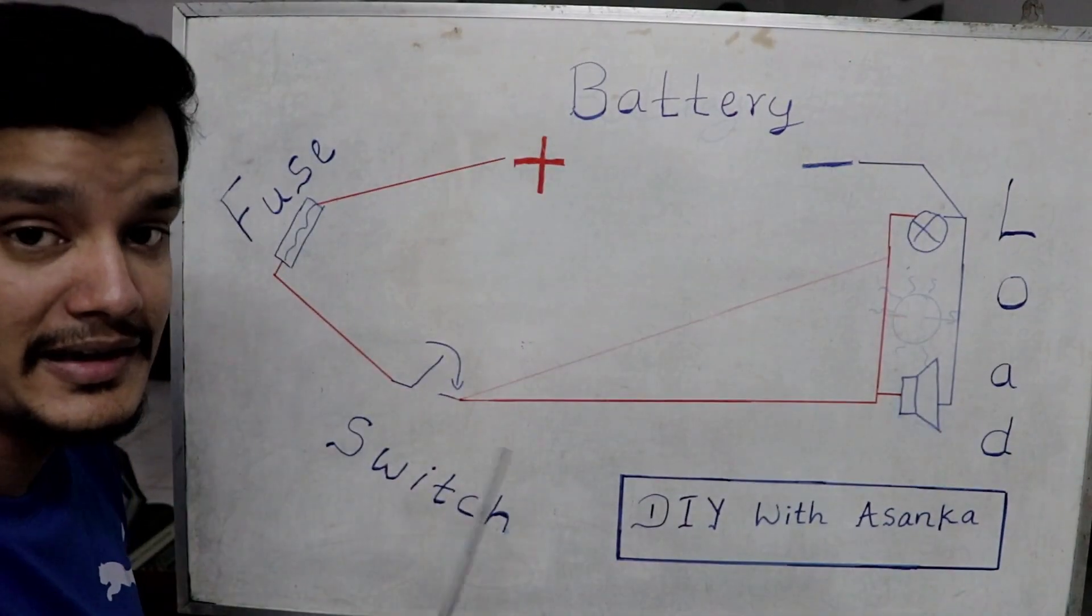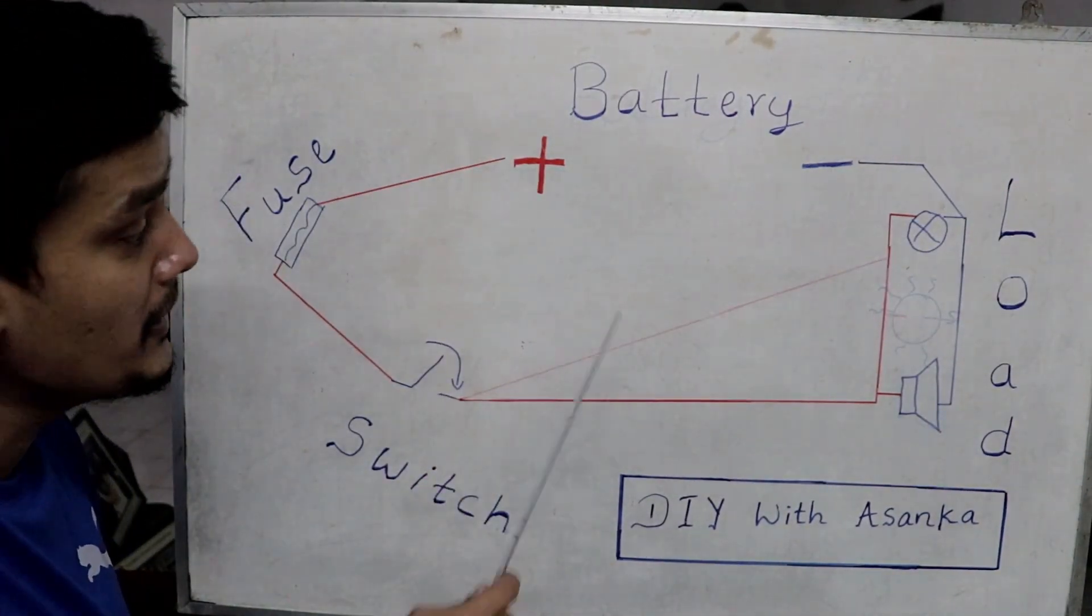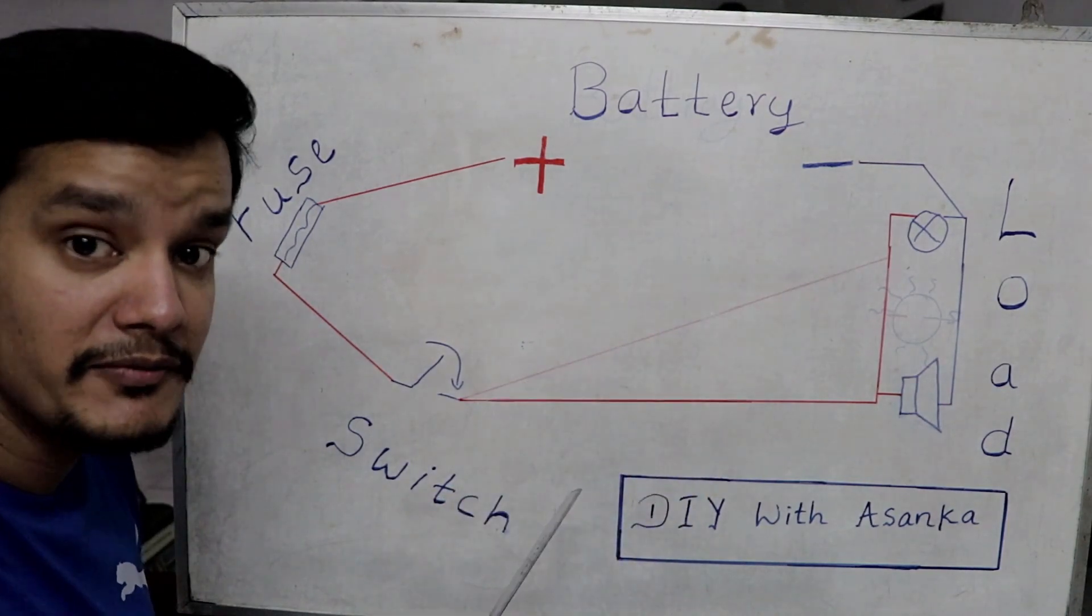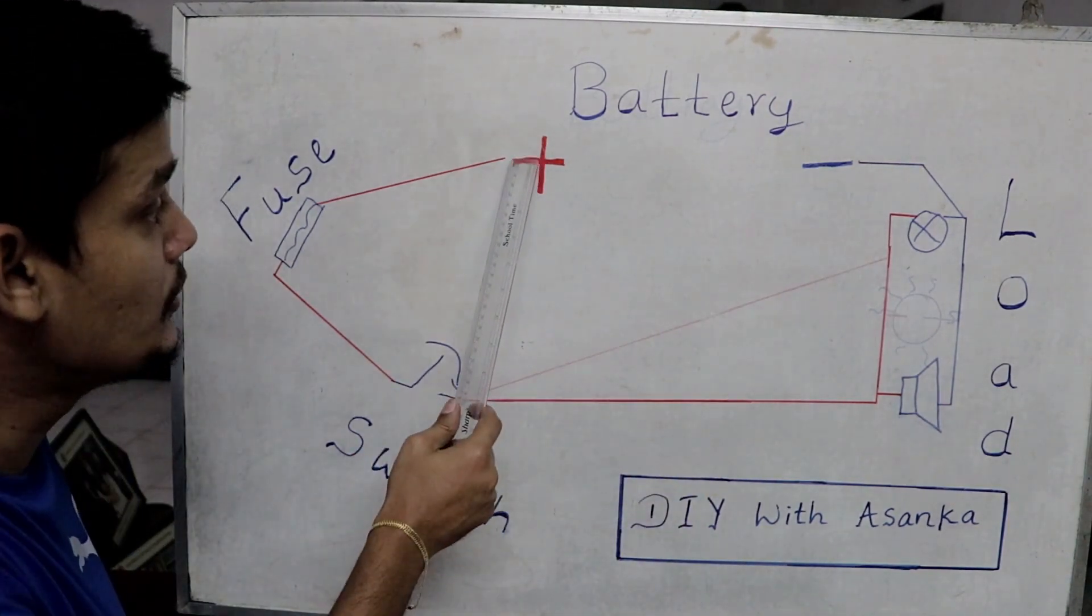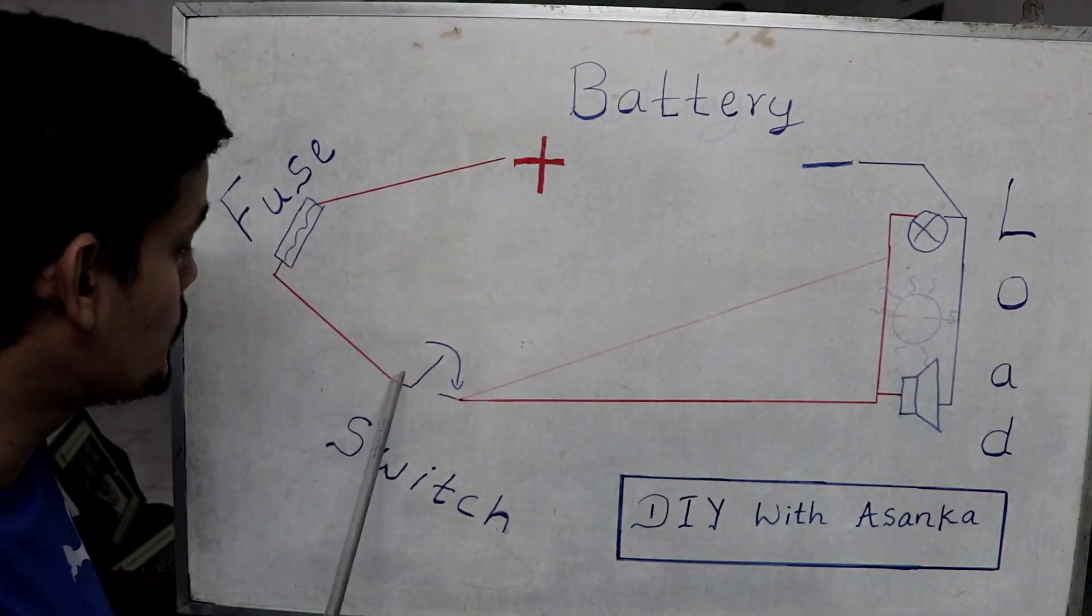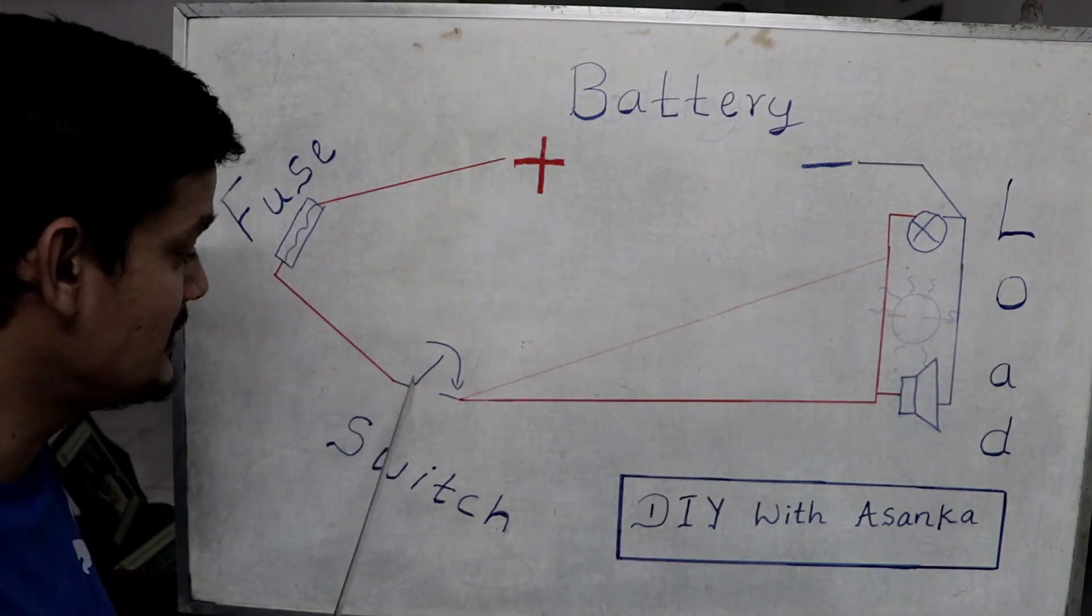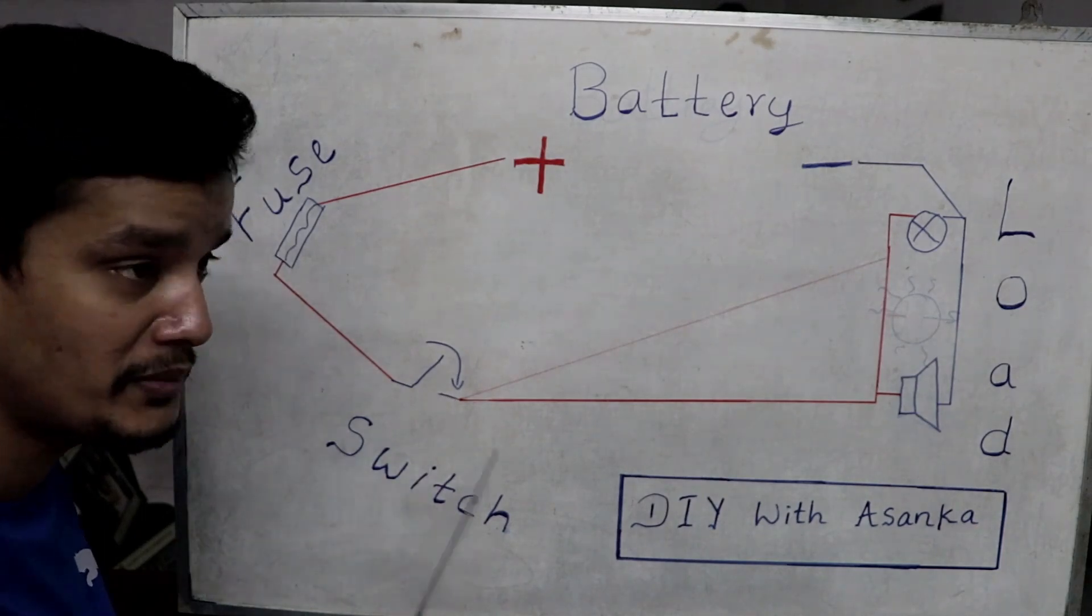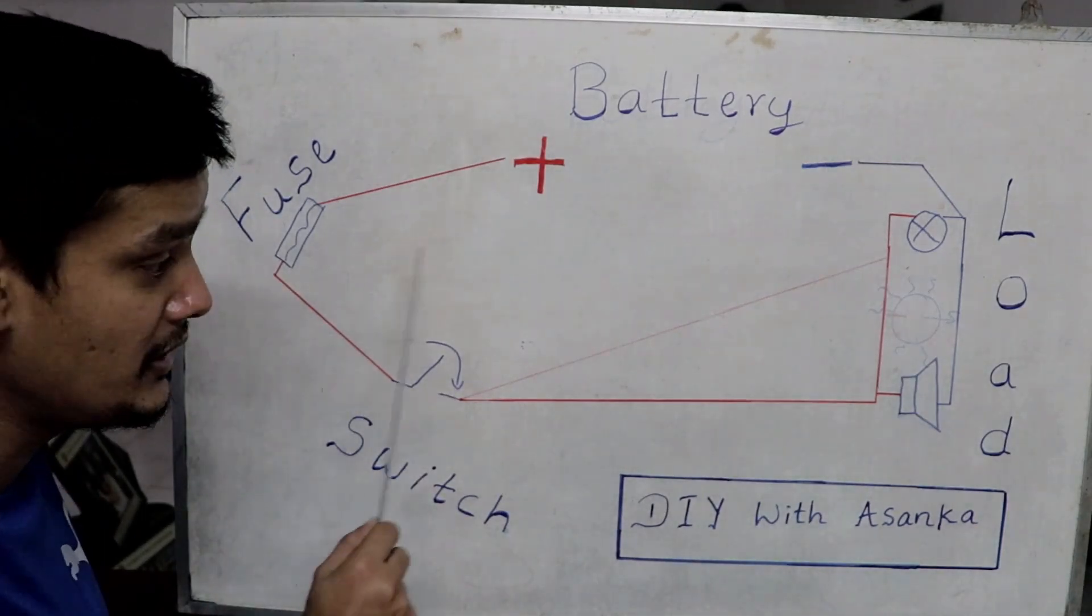This is how the block diagram of this circuit is going to look like. You have your battery with the positive and negative terminals. From the positive side, you will have a wire going to the fuse. From the fuse, this positive wire goes through a switch. Once this switch goes to the close position, power flows from the battery to the load.